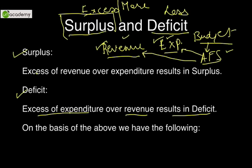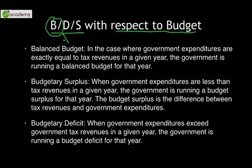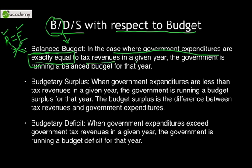On the basis of these basic meanings, we come to the budgetary allocations. The code word I have written here is BDS with respect to budget. B stands for balanced budget. What do we mean by balance? Revenue is equal to expenditure — whatever you earn, you are spending everything. There is no less or no more scenario. In the case where government expenditures are exactly equal to the tax revenues in a given year, the government is running a balanced budget for that year.